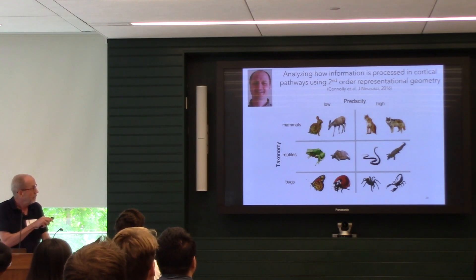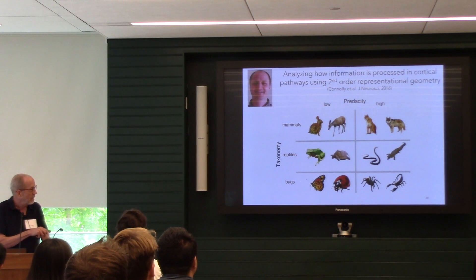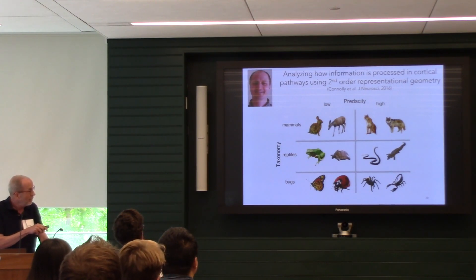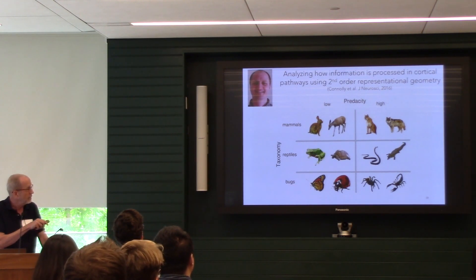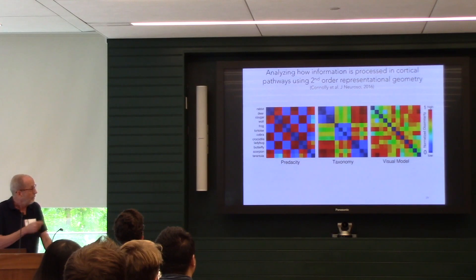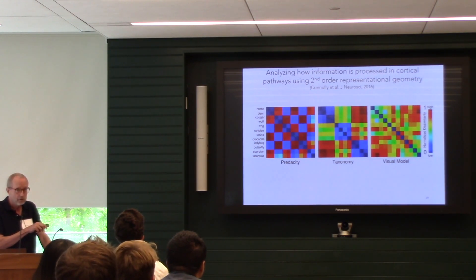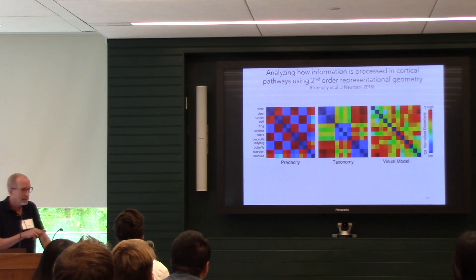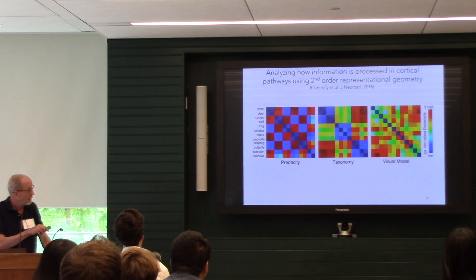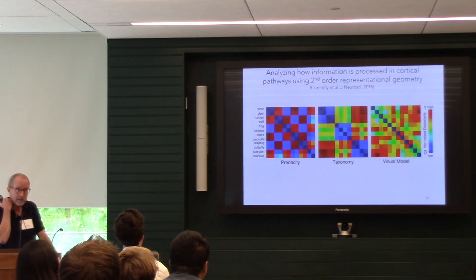In a later study, Andy had 12 species of animal across three taxonomic categories — mammals, reptiles, and bugs (including arachnids). He picked animals considered safe/low-threat and animals that are high-threat, like scorpions and cobras. Using Mechanical Turk ratings, he built similarity structures based on threat potential, taxonomic class, and visual properties (analyzed with a V1 model). He found one similarity structure for threat ratings, another for taxonomic similarity, and a third based on visual properties.